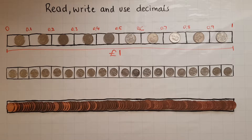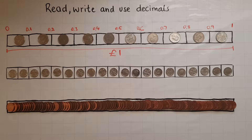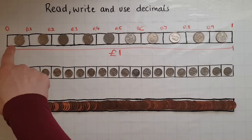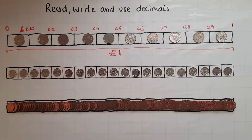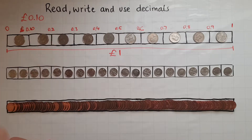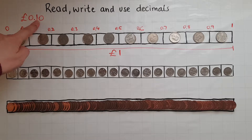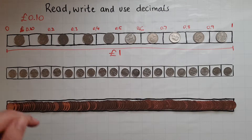That is how we represent decimals using money out of a whole pound. Now I've written 0.1, 0.2, 0.3, 0.4, but we also know that money is written with two decimal places. So a 10p coin is written as 0.10 like that in a shop — 0.10, which means 10p. So there are no pound coins yet, there is one 10p coin and there are no single pennies.